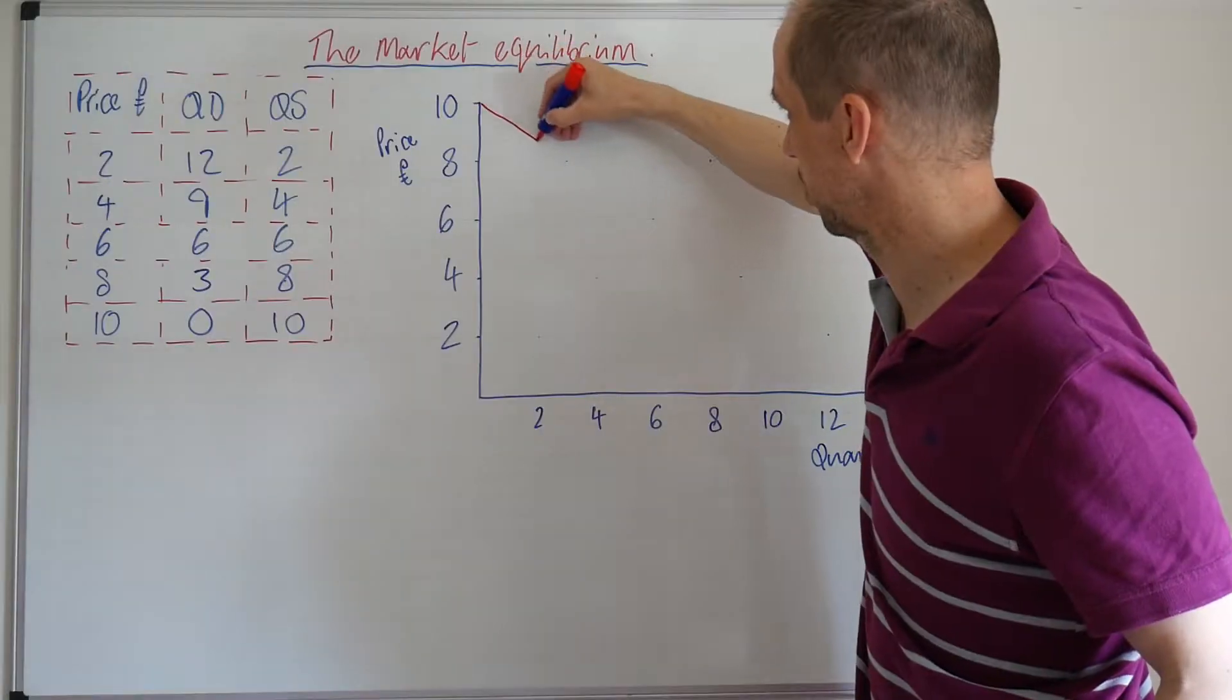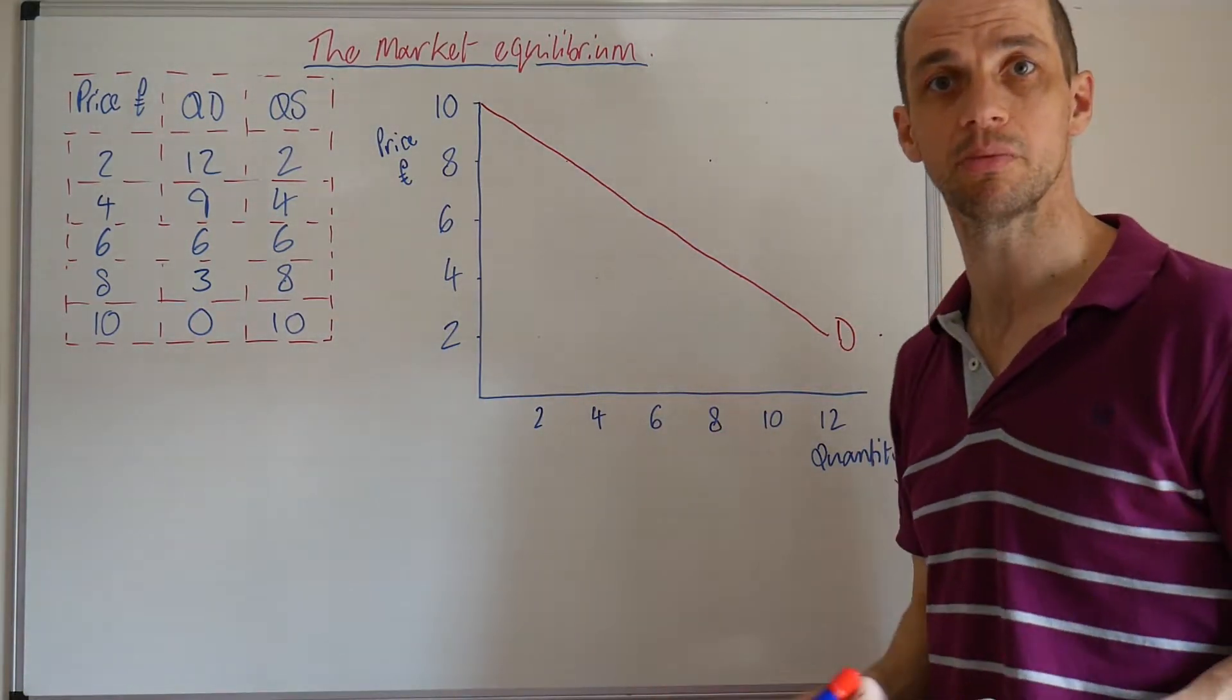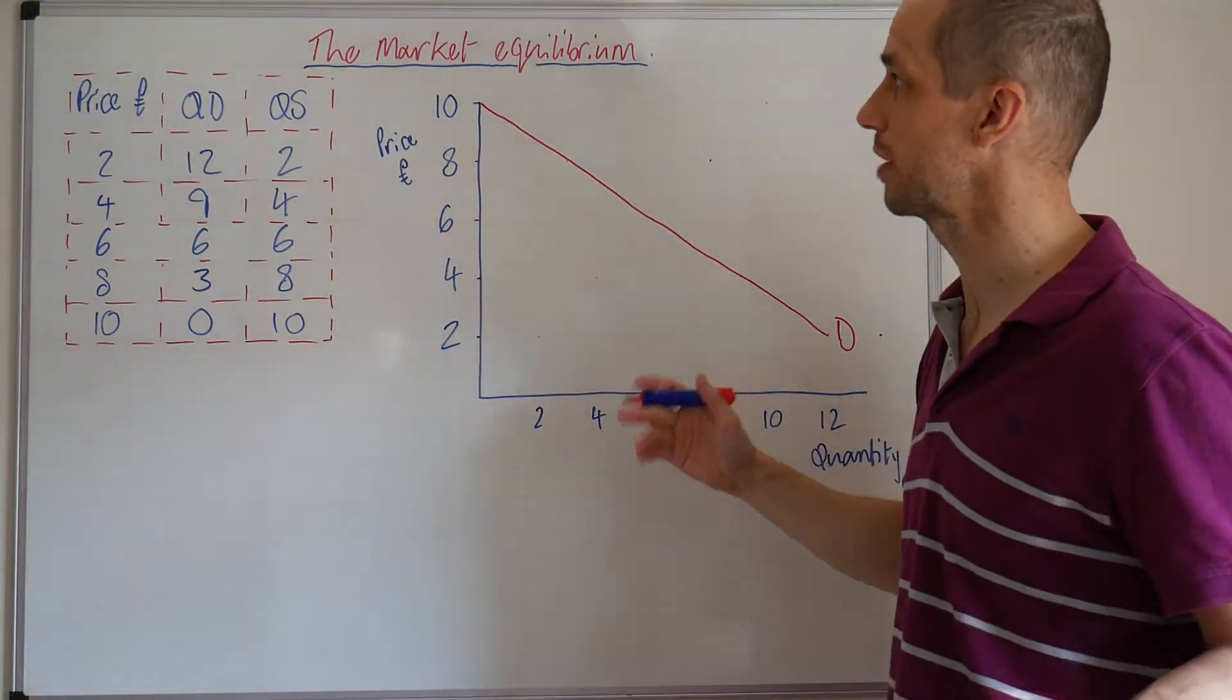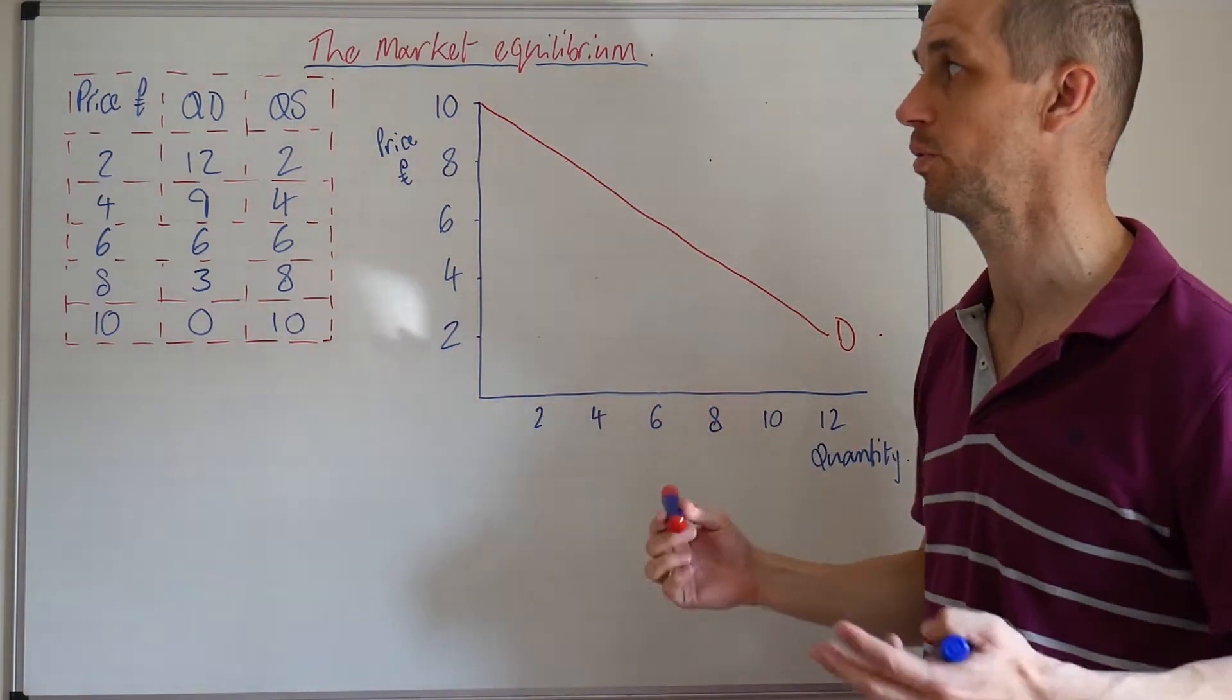So let's just plot those points through and that gives us our demand curve looking something like that. Nice and straightforward. We see that negative relationship between price and quantity demanded there.